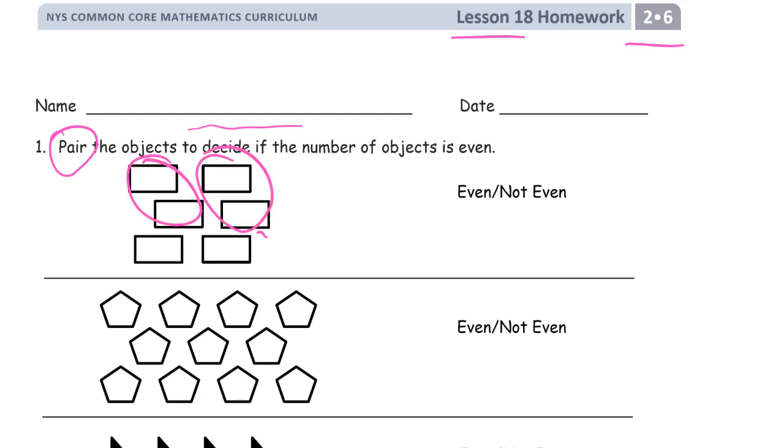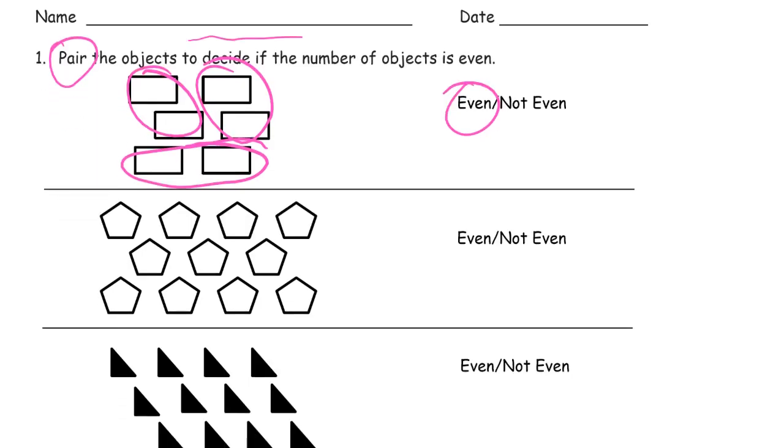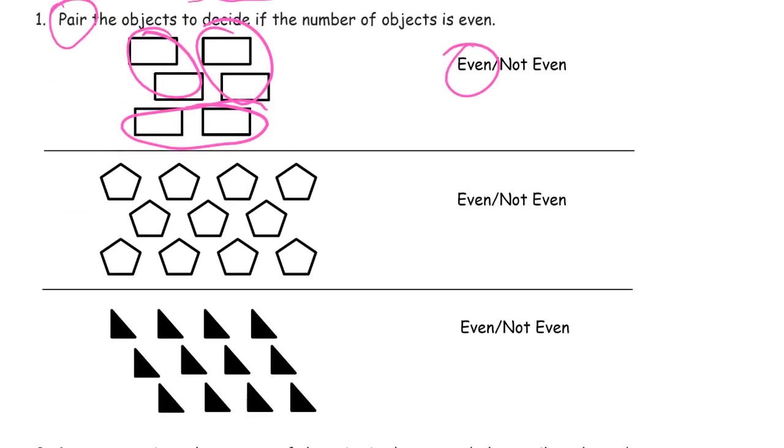Pairing objects means circling them in groups of two for this. A pair is always a group of two. So I'm going to circle groups of two. And the rule is, if everything has a partner or can be paired up, then it is even. And if there's an odd man left out, then it's not even.